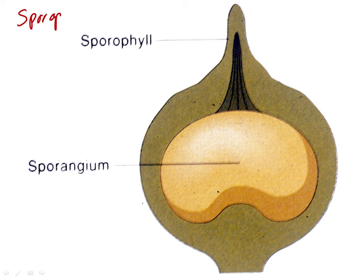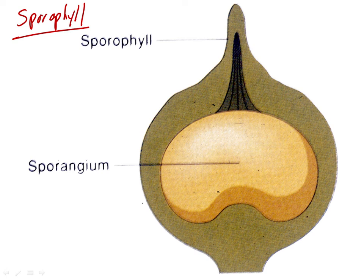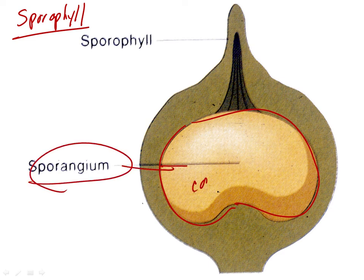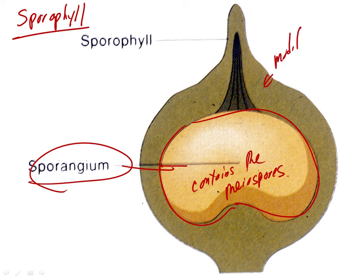The sporophyll is the sporangium-bearing leaf. Here is the sporangium containing the myospores, and it is born on a modified leaf — sometimes highly modified, sometimes not very modified.